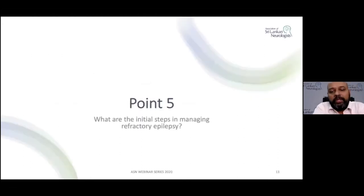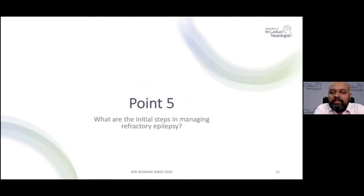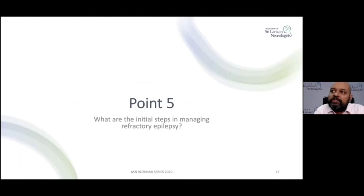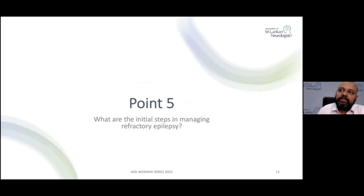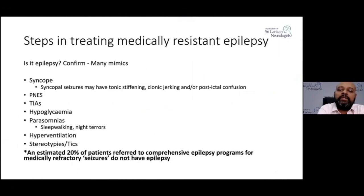The fifth point: what are the initial steps in managing refractory epilepsy? When a patient comes to you who has not responded to at least two antiepileptic drugs, the process of classifying them begins. Before you class them as having pharmacoresistant epilepsy, you need to confirm whether this is indeed epilepsy itself, because there are many mimics of epilepsy.